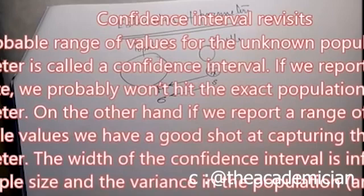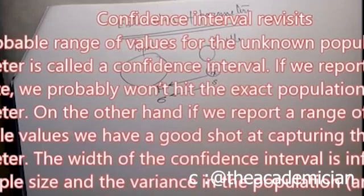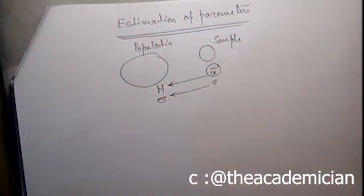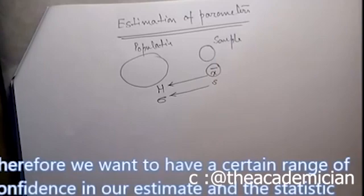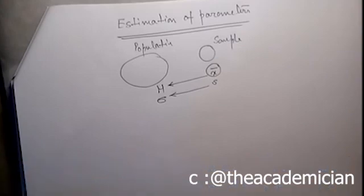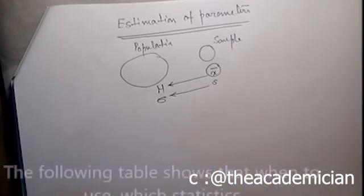The width of the confidence interval is influenced by sample size and the variance in the population. If any sample statistic follows a certain distribution, that is the guarantee that the computed statistic will be representing the population parameter. Therefore, you want to have a certain range of confidence in your estimate, and the statistic should lie within that confidence range.